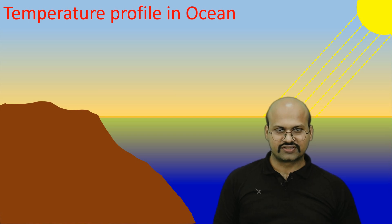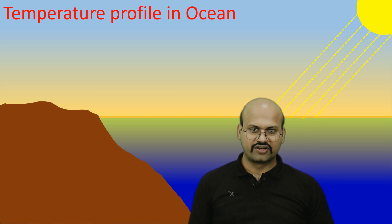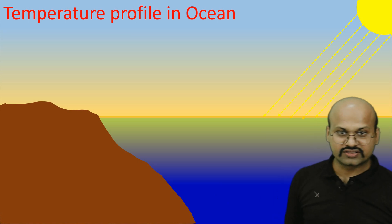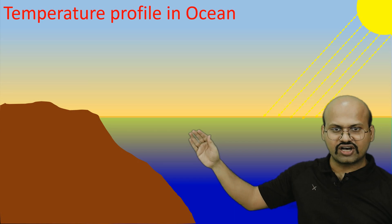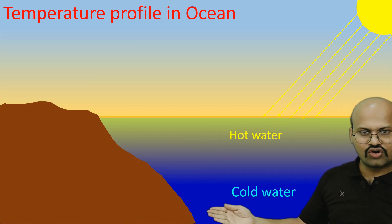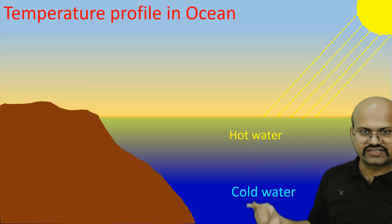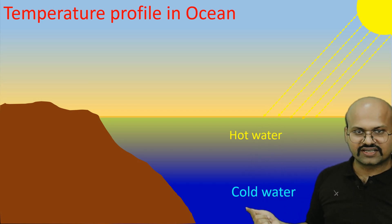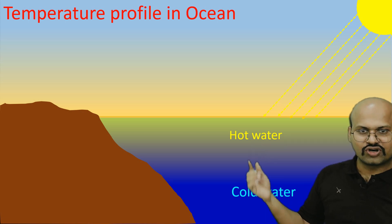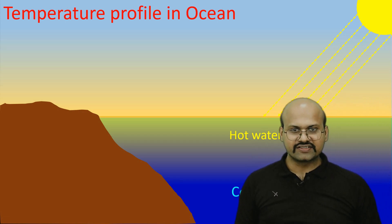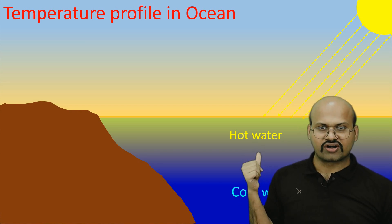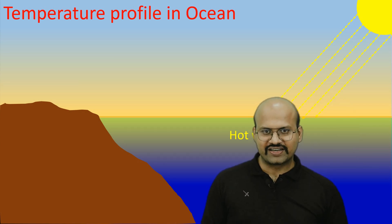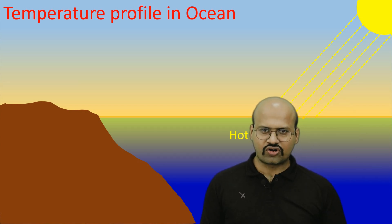In the case of oceans, this convective mixing by temperature is not possible. The ocean is heated by sun rays at the top, so the topmost layer is hot and less dense, while cold water lies in the lower region and is denser. Because cold water is denser and hot water is less dense, mixing cannot occur. So the convection cell mechanism that works in the atmosphere does not work in the oceans.